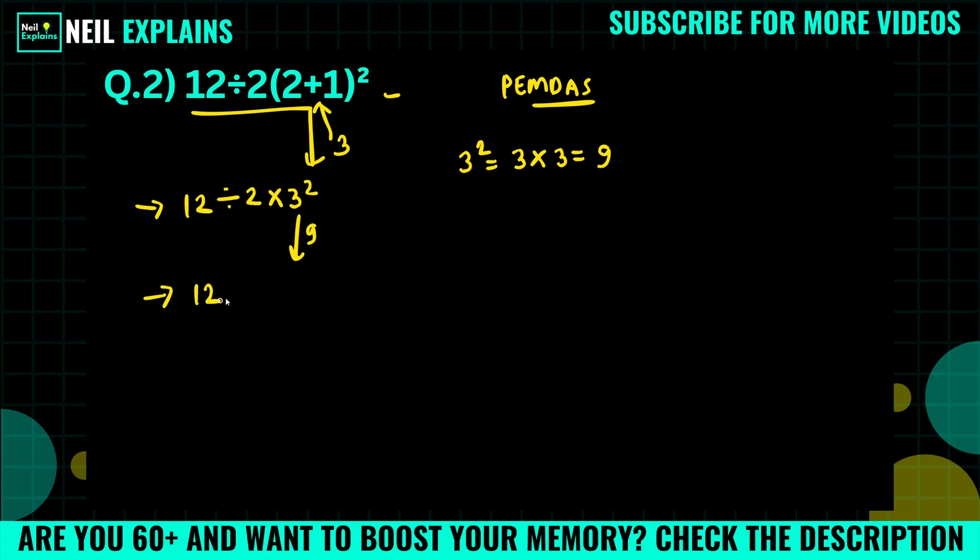Now 12 divided by 2 times 9. So if you think like 12 divided by 2 times 9, that is 18, and 12 by 18 which equals to 2/3, then this is the wrong way.